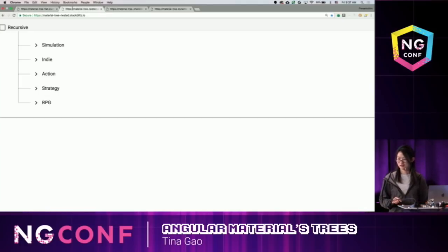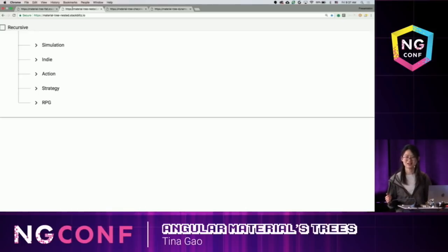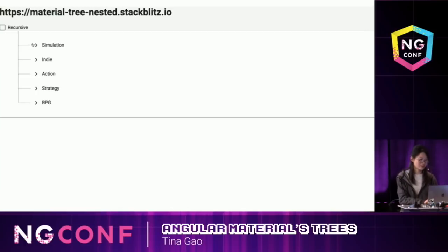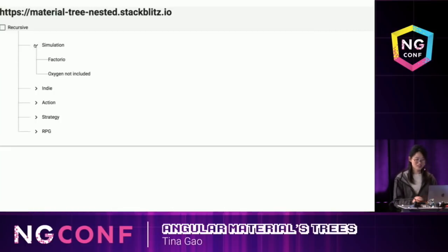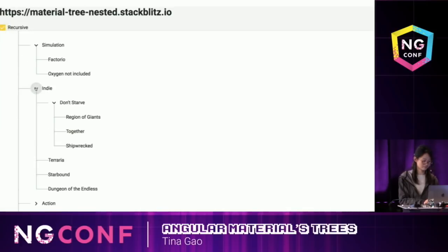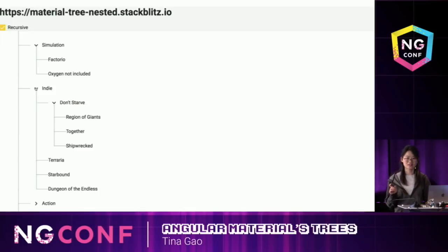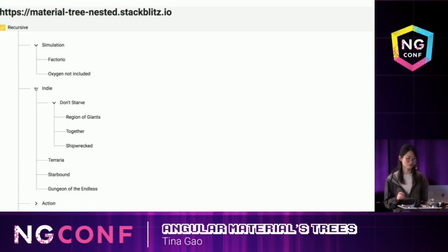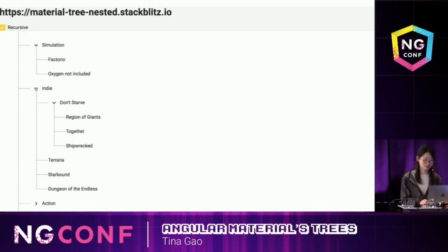Here's an example of a nested tree. We use the same data structure and data sets as the flat tree. Similarly, you can toggle on the tree node to expand it, and we can make it recursive. You can see the dotted line connects the parent and its children. This kind of decoration is hard to do in flat tree, but it's easier to implement in nested tree.